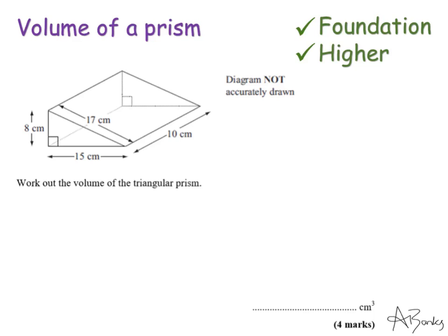Since this is called a triangular prism, it's giving you a hint that it's the triangle that runs all the way through the shape. I could draw that triangle anywhere — any point through the shape. We can almost imagine if I took a slice through this prism, I'd still have this face at the front. I'm going to shade in what we call the cross-section first, so you can see more clearly what I'm talking about.